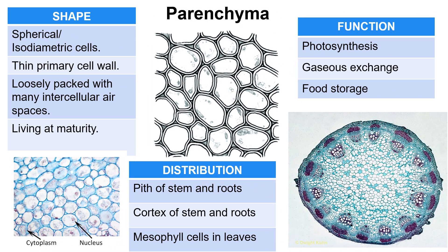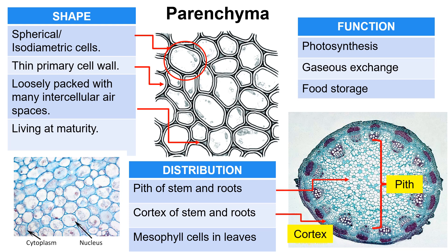Parenchyma is the most abundant ground tissue in plants. The cell's shape is roughly spherical or isodiametric, with thin primary cell walls which are loosely arranged with many intercellular air spaces. It is still a living cell when it reaches maturity. It is usually located in the pith of stem and roots, and can also be found in the mesophyll cells of leaves. Some parenchyma tissue functions include photosynthesis, gaseous exchange, and food storage.